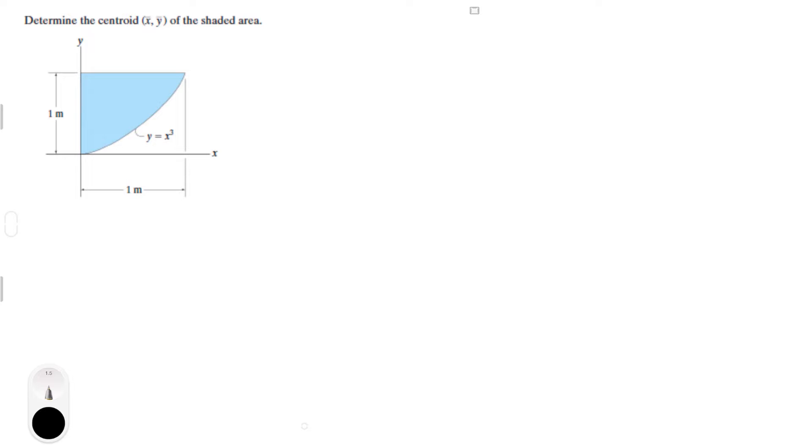Alright guys, let's do this problem that says determine the centroid x̄, ȳ of the shaded area. So centroid is equal to a point denoted by x̄, ȳ. I know this problem can be intimidating but this is super easy to solve, so let's get at it.